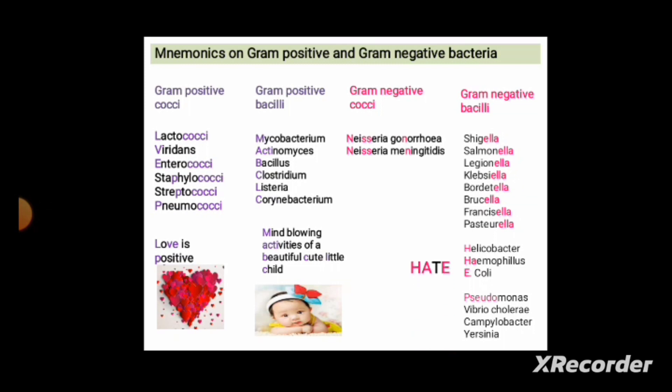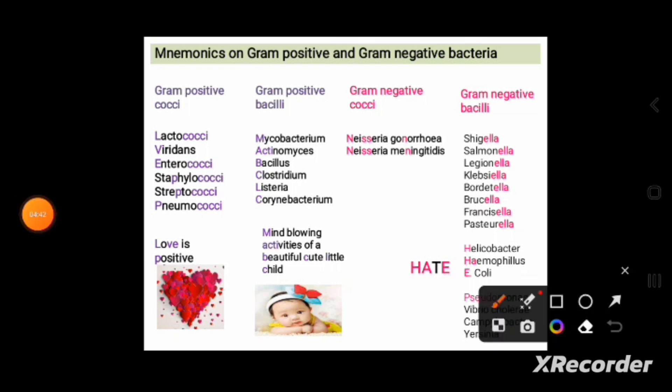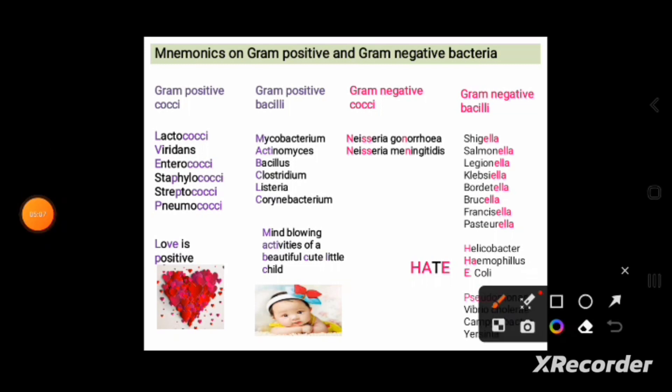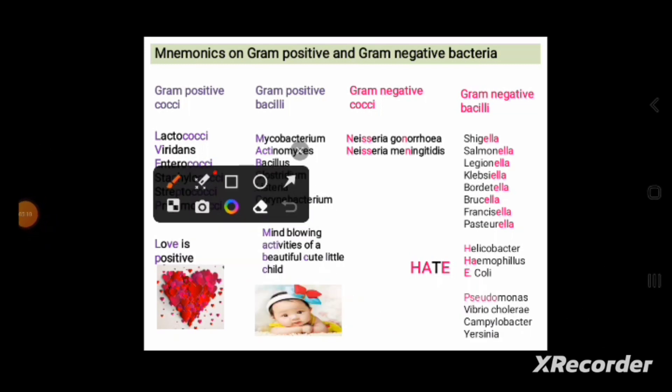There are also some important gram-negative bacilli: Helicobacter, Haemophilus, and E. coli. To remember these, use the word HET — which gives you a negative sense. H for Helicobacter, HA for Haemophilus (omit the E), and the last E for E. coli. By remembering HET you can recall these three gram-negative bacilli.